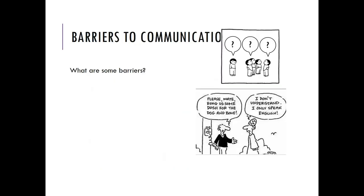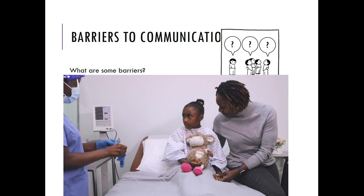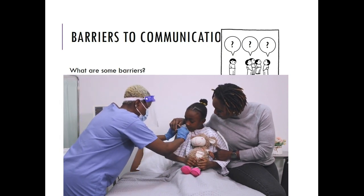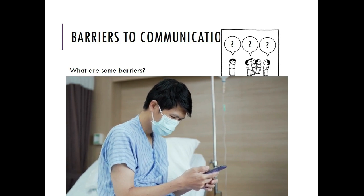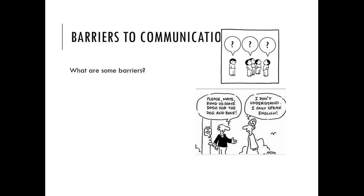Barriers to communication include a client's age — we may have to change how we communicate with a five-year-old versus a seventeen-year-old versus a thirty-five-year-old. Language is another barrier — if they speak a different language, have a different dialect or culture, or English is their second language. Their attitude and level of trust are also barriers, as are hearing impairment and speech impairment. Review your textbook list for additional communication barriers.